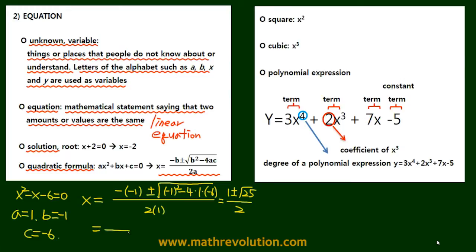Then, this is 1 plus or minus 5, so this will give us two answers. One is 1 minus 5 over 2, and the other is 1 plus 5 over 2. So we get negative 2 and 3.